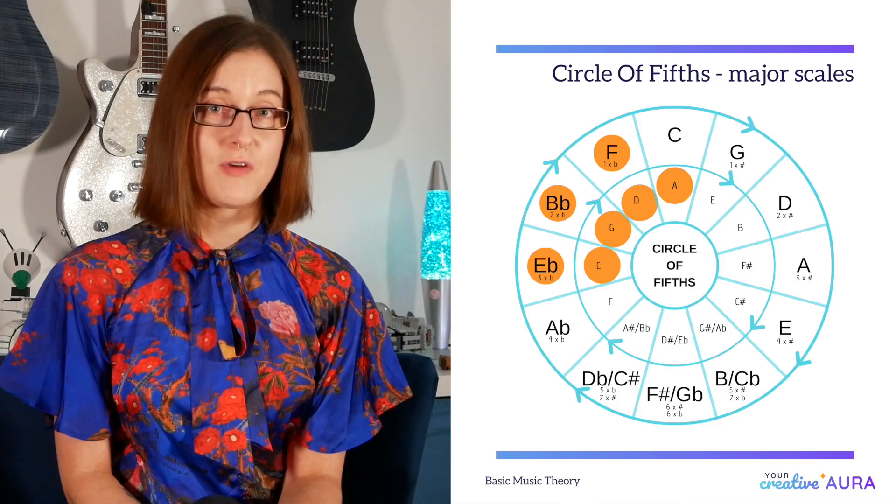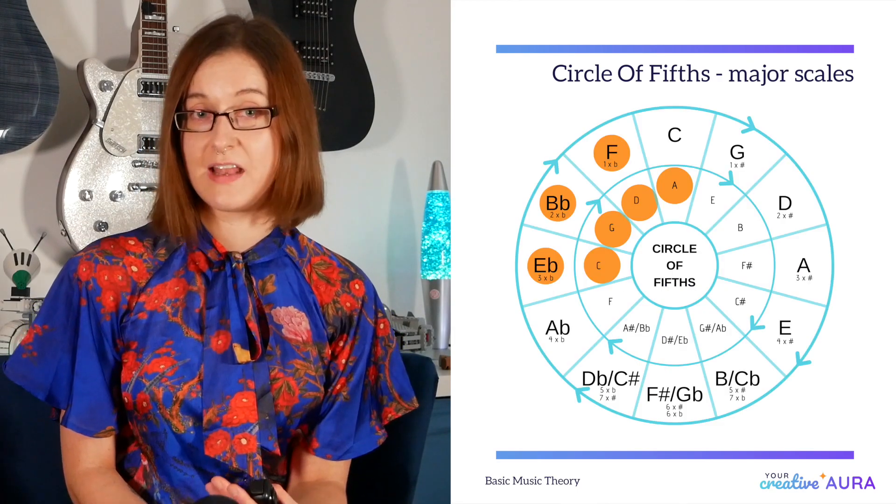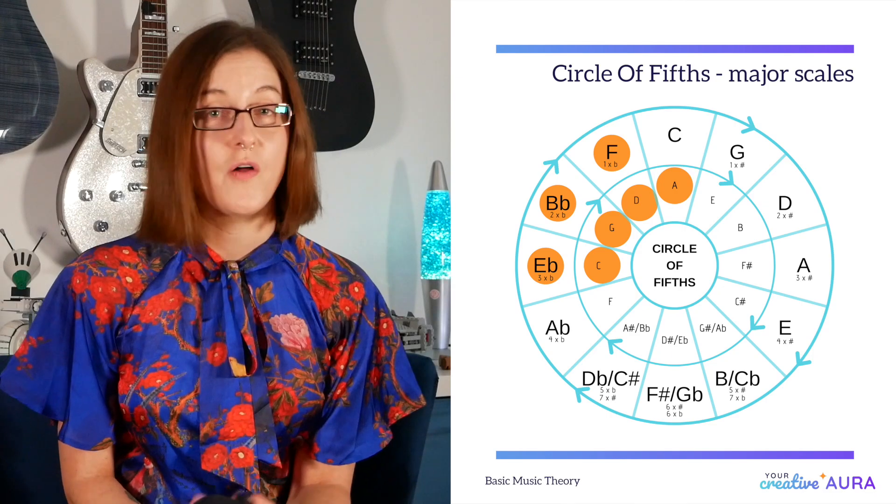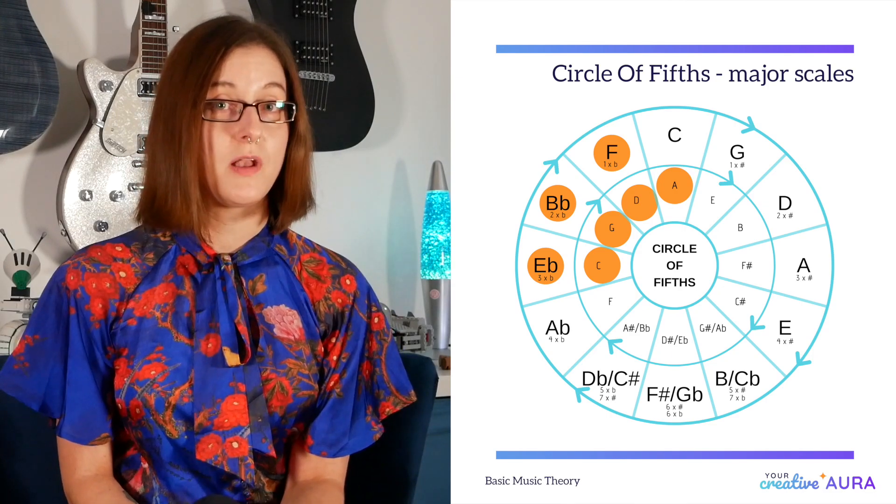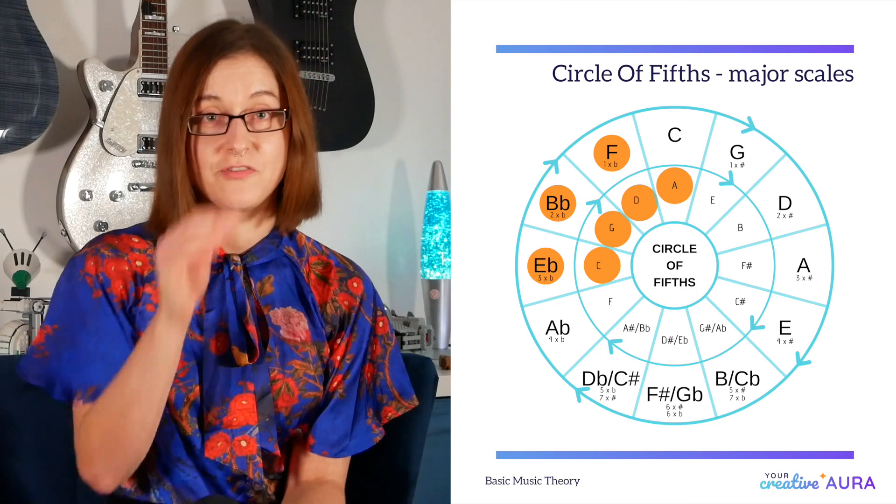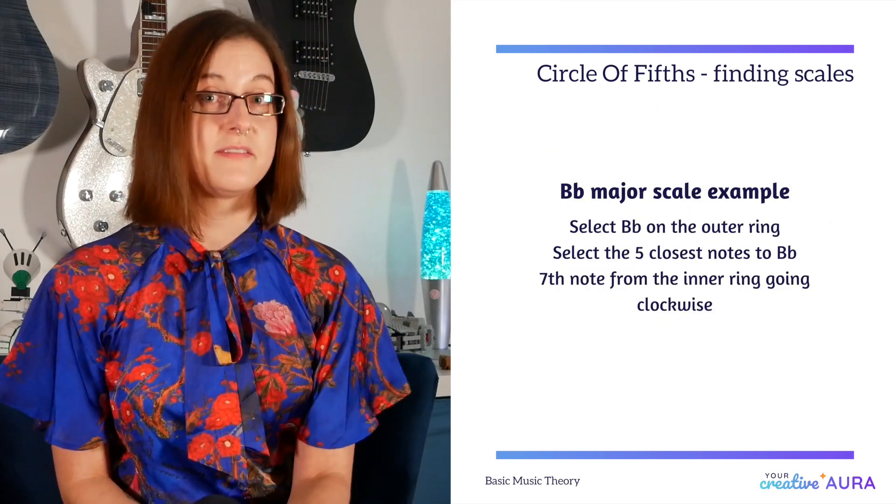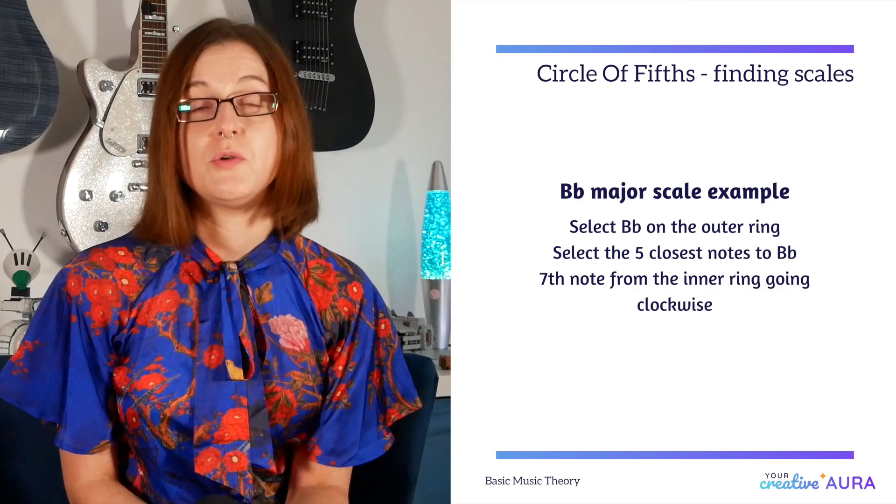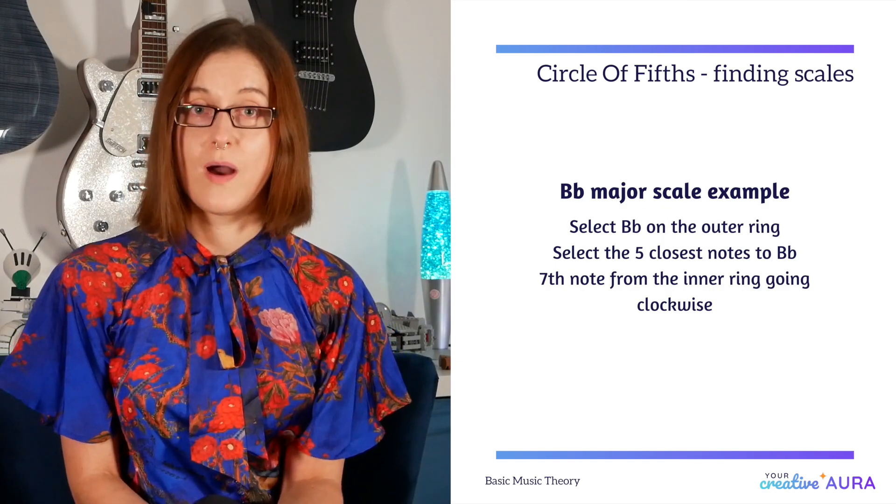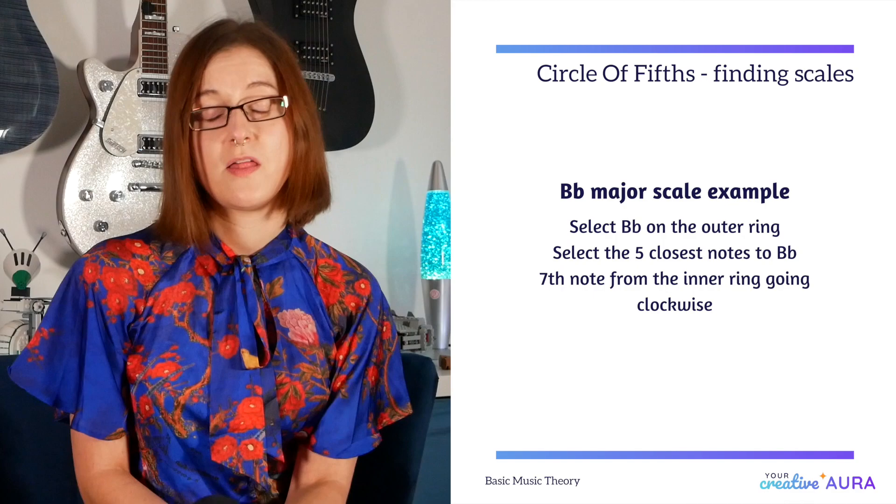So for the outer ring it would be an E flat to the left and F to the right. On the inner ring, the G below, the C to the left and the D to the right. And for the last note, the seventh note, you use the inner circle going clockwise, which would give you the note A.